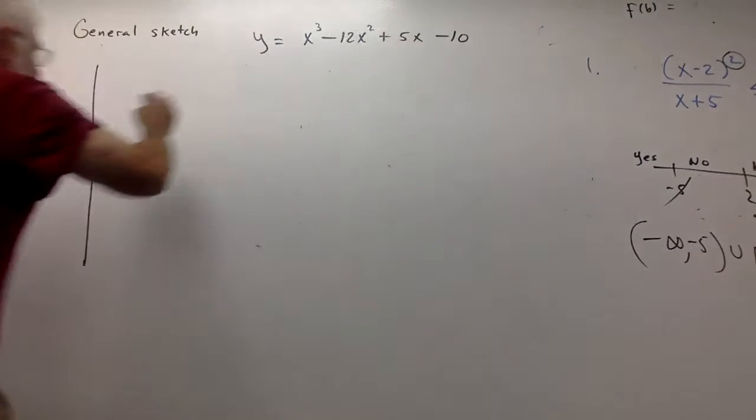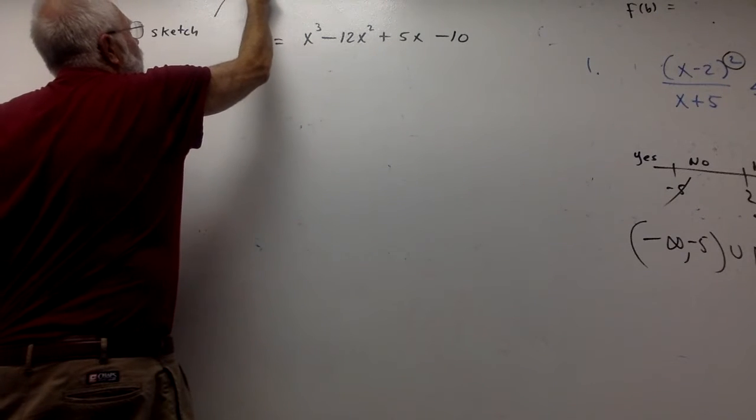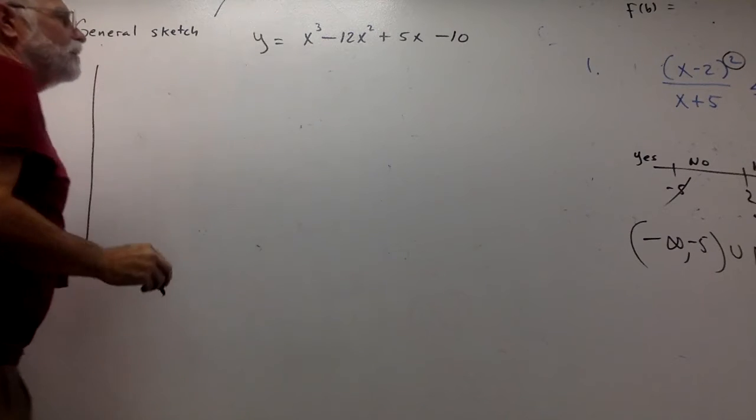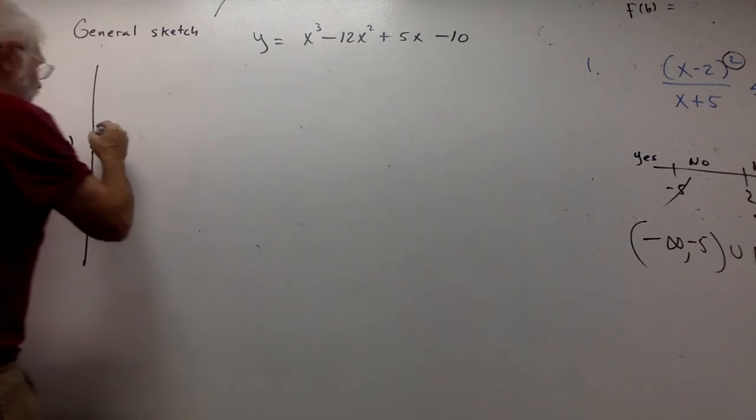I know 5x minus 10 is what we call tangent. A tangent shares a rate of change at an instant and a data point. So 0, negative 10. Not only do I know the y-intercept, but I know that at this instant I'm going up at 5 to 1. That's going to make it bend.